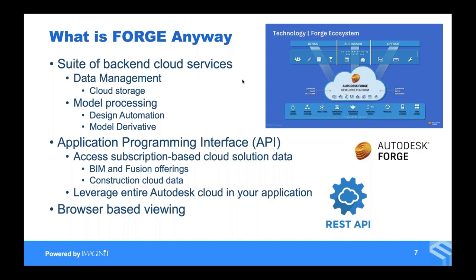They do all of that for you, and best of all, it's really cheap. It's hard to argue with the Forge cost model — it is a consumption model, so you're paying as you go. You have to think about your processing time. That comes into play when you start working with design automation because you're paying for the cycle times on the machine that's processing. So you want to be efficient, but don't be afraid of it — it's very, very cheap, around 10 minutes for a dollar. It is very, very affordable.